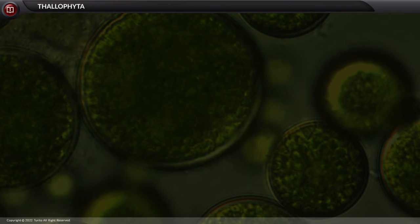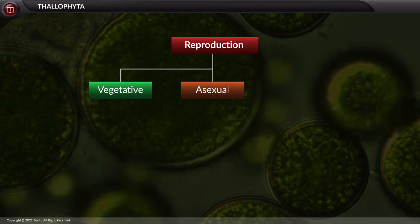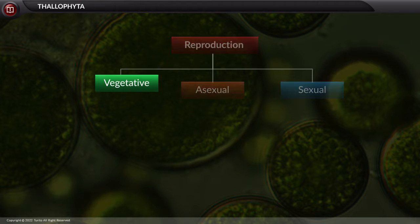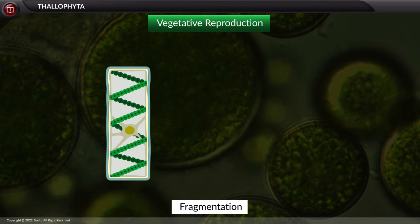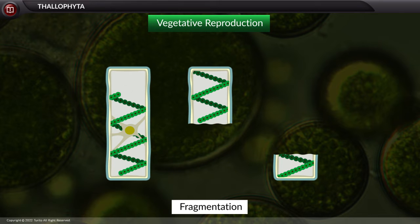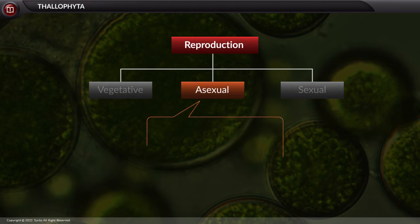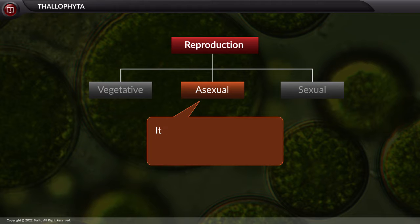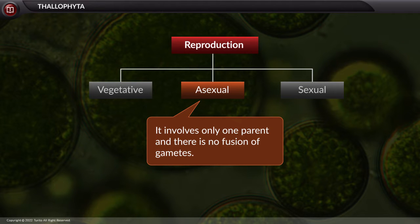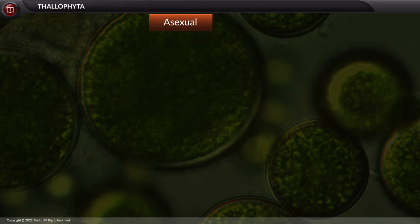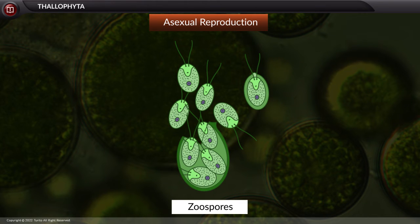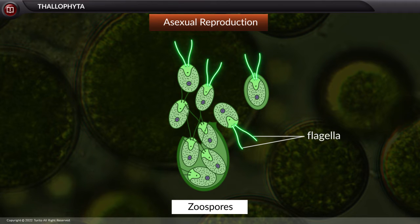Reproduction in algae can be either vegetative, asexual, or sexual mode. The vegetative mode of propagation is fragmentation, during which the algal filaments break into fragments and each fragment develops into a new organism. Asexual reproduction involves only one parent and there is no fusion of gametes; it is via zoospores, which are flagellated and on germination give rise to new plants.